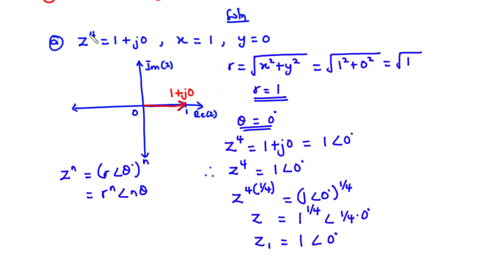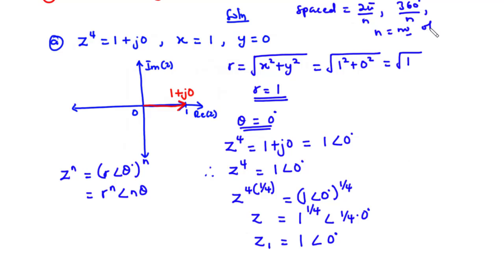Since we have z to the power 4, we need to arrive at 4 solutions or 4 roots, and we have z1 as the first solution. The roots of a complex number have the same modulus; the difference is they are symmetrically spaced by 360 degrees over n, where n is the number of roots. Since we have z to the power 4, we have 4 solutions, so the solutions are symmetrically spaced by 360 degrees divided by 4, which equals 90 degrees.